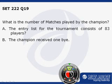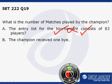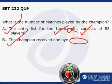Statement A says the entry list for the tournament consists of 83 players. From statement A alone we cannot find the answer because we do not have the data on how many byes were given to the champion. So statement A is insufficient alone. Statement B alone is also insufficient because we do not have the data on how many players were in the tournament. Individually, statement A and statement B cannot give you the answer.